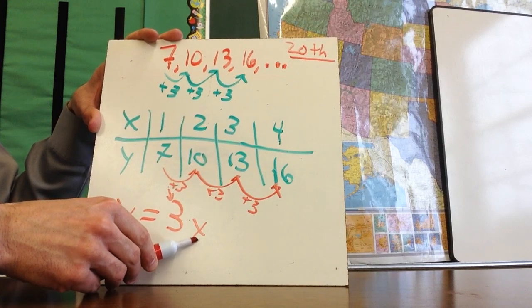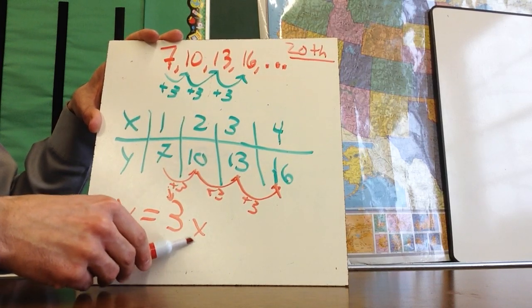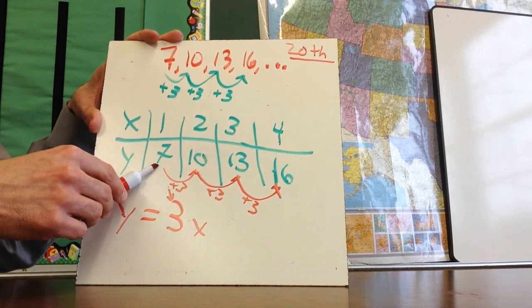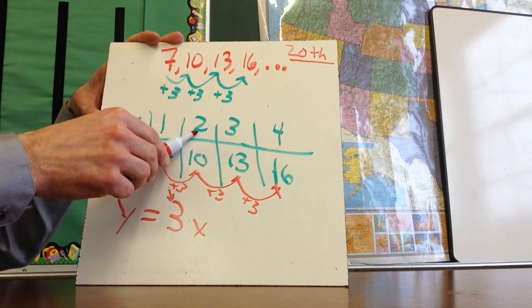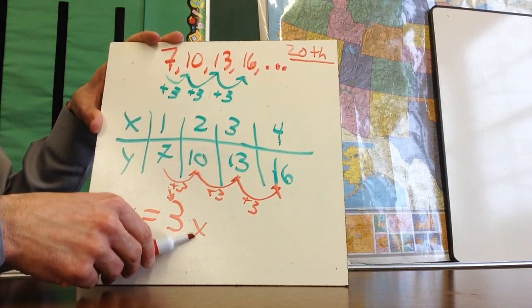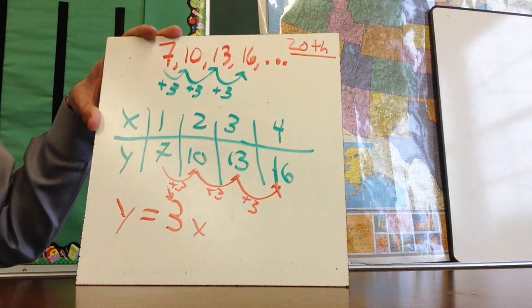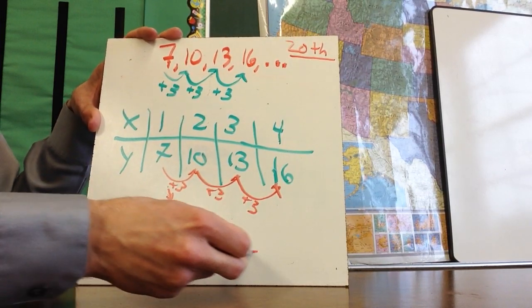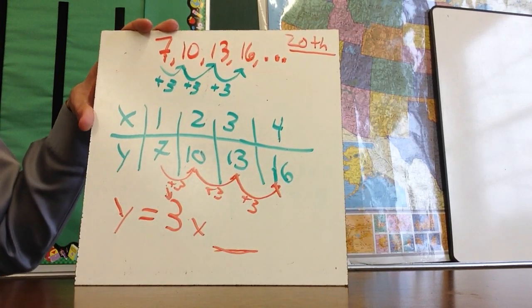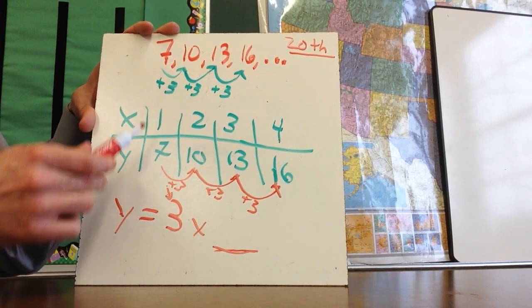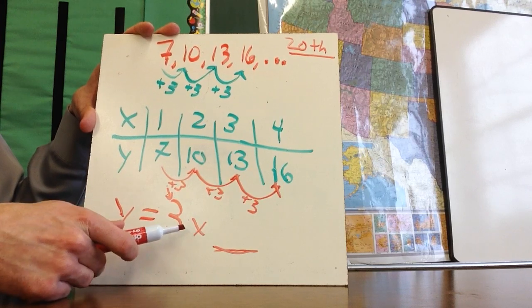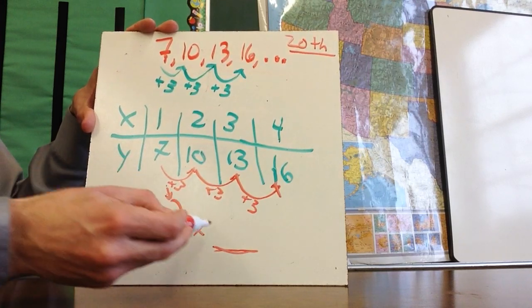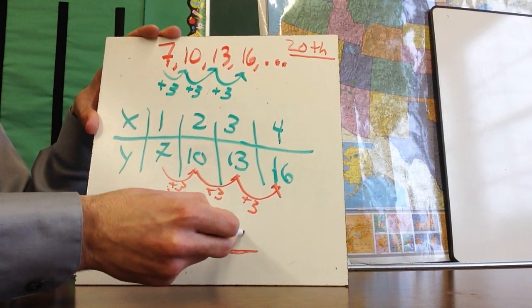But I know that if I go Y equals three times X, if I substitute a one in here for X, one times three is three, but that's not what Y equals. Or if I take this two and substitute, three times two is six, but that's not what Y equals. So I need to add or subtract something behind this that's going to actually make this true. When I put a one in here, three times one is three, but it needs to be seven. So what I need to do is add four more.